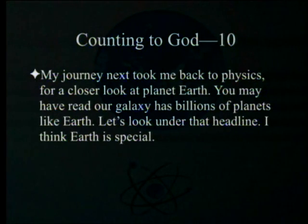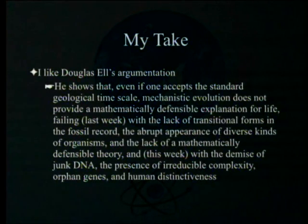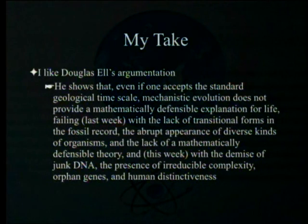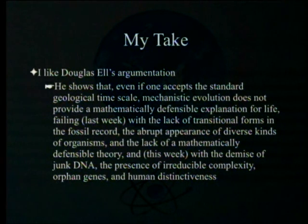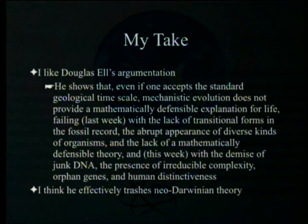I began assuming neo-Darwinian theory must be true, then learned that the facts of science contradicted it — the emperor of neo-Darwinian theory has no mathematical clothes. When the paradigm breaks, an awful lot of college biology professors are going to look pretty silly. To me, the puzzles of macroevolution are the fifth wonder of modern science — the fifth of seven in our count to God. My journey next took me back to physics for a closer look at planet Earth. You may have read our galaxy has billions of planets like Earth — let's look under that headline. I think Earth is special. Doug LaSalle's argumentation shows that even accepting the standard geological timescale, mechanistic evolution fails with lack of transitional forms, abrupt appearance of diverse organisms, demise of junk DNA, irreducible complexity, orphan genes, and human distinctiveness.